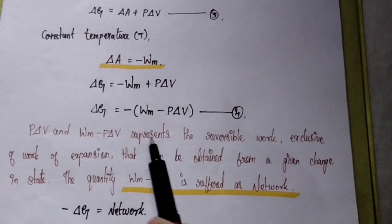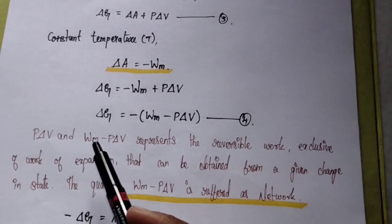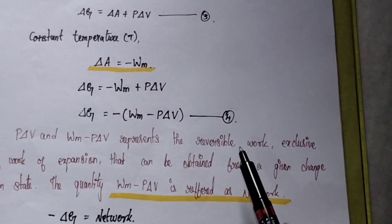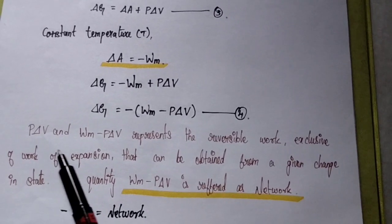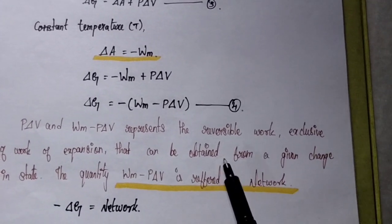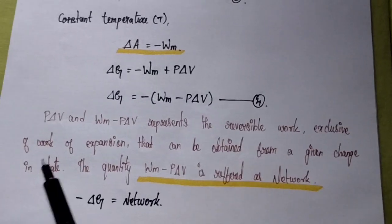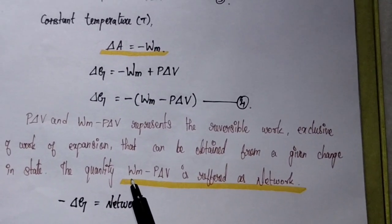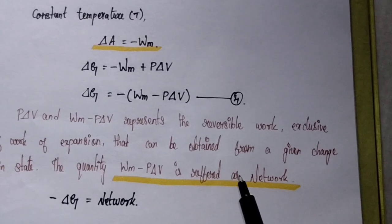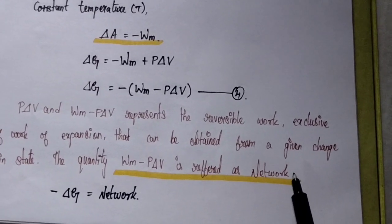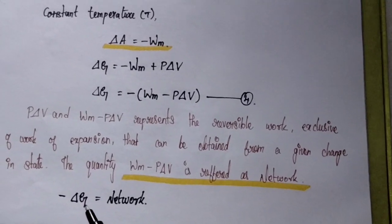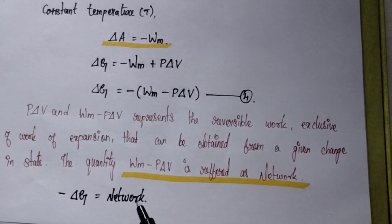Now PΔV represents work of expansion, and WM minus PΔV represents the reversible work exclusive of work of expansion that can be obtained from a given change in state. The quantity WM minus PΔV is referred to as net work. Therefore, minus ΔG equals net work.